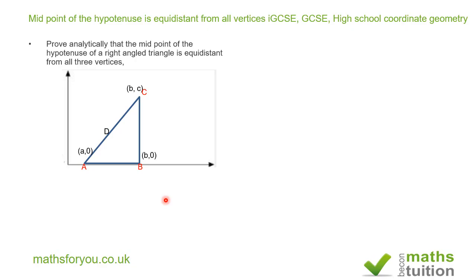We need to find the coordinates of point D, which is the midpoint between C and A. So the x-coordinate of D would be (b + a) / 2, while the y-coordinate of D will be (c + 0) / 2. We don't have to include the 0, but it's there to explain what I'm doing.